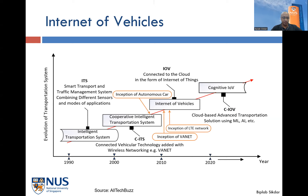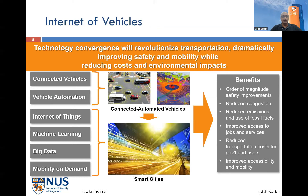What started off with the vision for intelligent transportation systems in the mid-90s — just using data to make things more efficient — evolved to connected vehicles, where vehicles would talk to each other or to roadside units. Now we are in the era of the Internet of Vehicles, where everybody is connected to the cloud. It's an extrapolation of the concept of the Internet of Things.